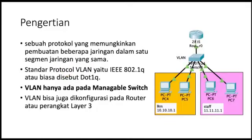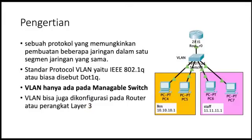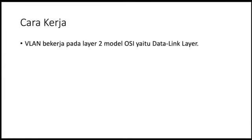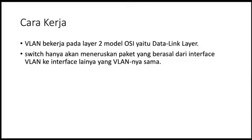VLAN ini memiliki protokol sendiri yang bisa bekerja di sana, yaitu IEEE 802.1Q, atau bisa disebut juga dengan .1Q. VLAN bisa dikonfigurasi pada router atau perangkat layer 3, data link layer. Router ini bisa diintegrasikan dengan satu buah manageable switch. Cara kerjanya: VLAN bekerja pada layer 2, model OSI, yaitu pada data link layer.